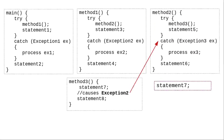Now let's say method 3 does statement 7, and then causes an exception of type exception 2. Again, it terminates immediately and throws the exception to its caller, method 2. Method 2 doesn't catch exception 2, so it also terminates immediately and throws the exception to its caller, method 1.